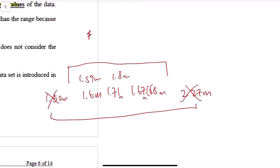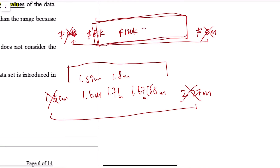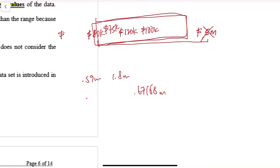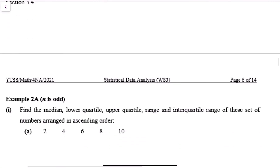The interquartile range gives a better general idea of the spread — the range is very big just because of that one extremely tall student, and that affects everything. Similarly with income: if most families earn 80k to 120k per year but one person earns five million dollars, the range becomes very large. If someone earns zero due to being jobless, the range is distorted further. By taking the interquartile range, you eliminate the effect of extreme values, giving a better measure of the middle spread. Next video we will look at examples.